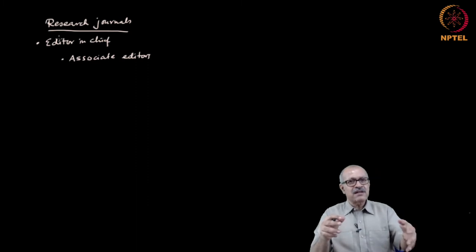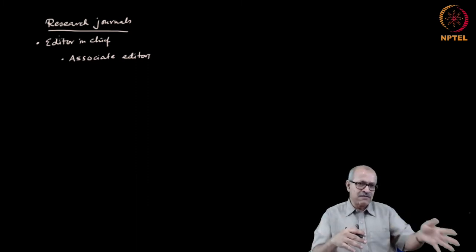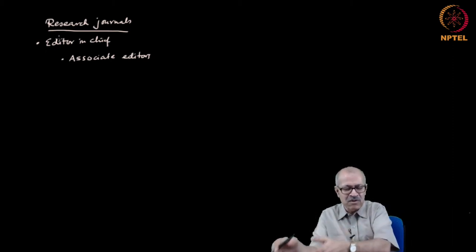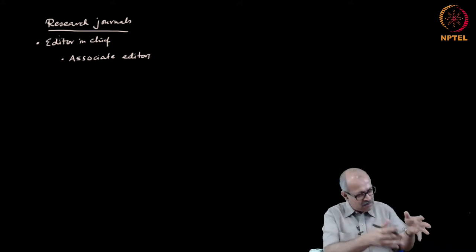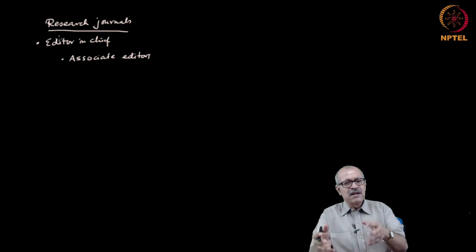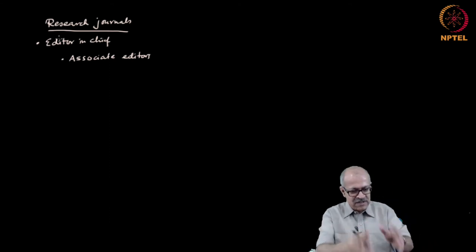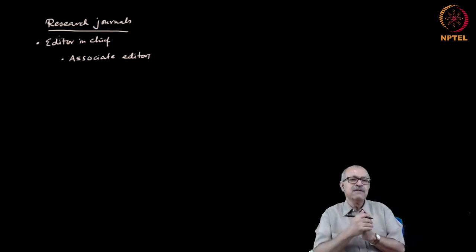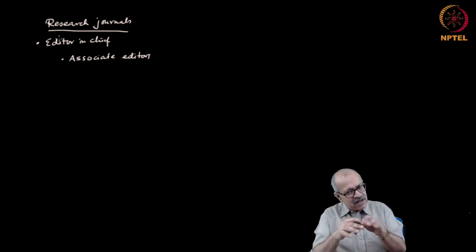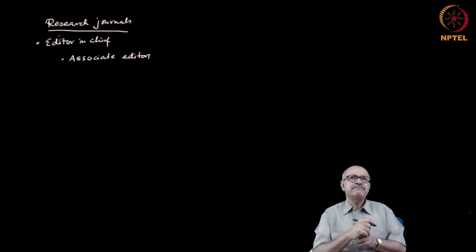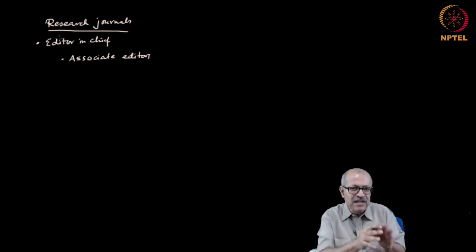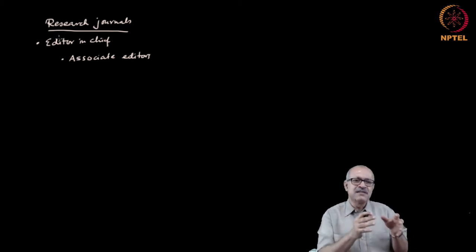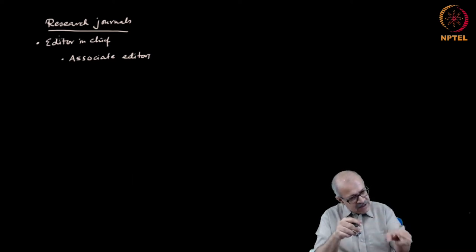Within physics there are sub-areas like statistical physics, gravitational cosmology, particle physics, condensed matter physics, and so on. Similarly, in chemistry we have inorganic chemistry, physical chemistry, organic chemistry, and biochemistry. There are journals dedicated to each subdivision, and within each subdivision there are specific areas of research — sometimes there are also very specialized research journals dedicated to a very specialized area.